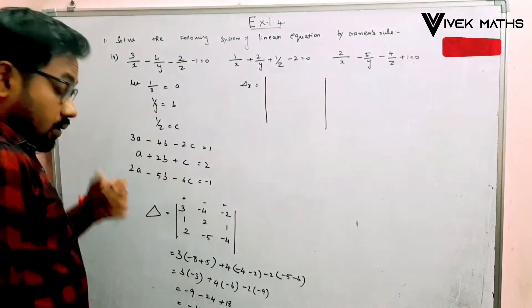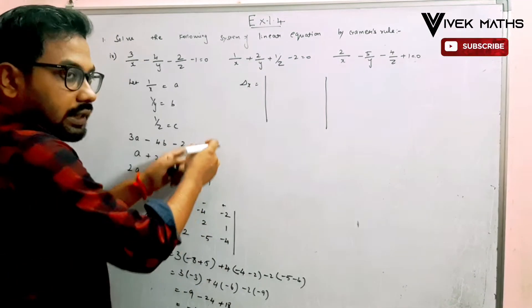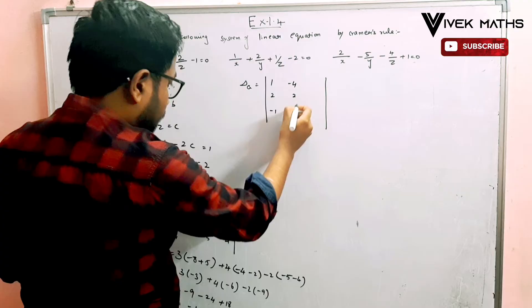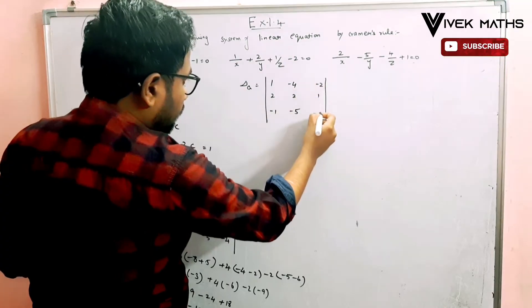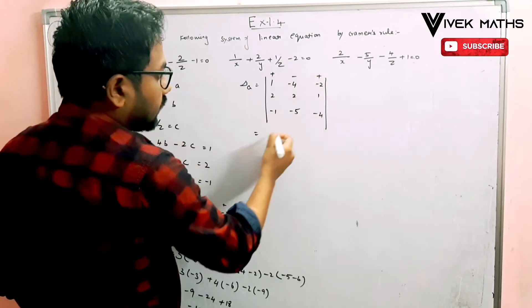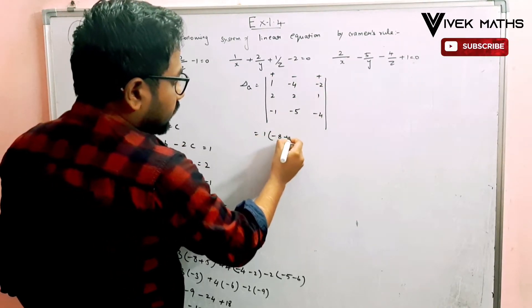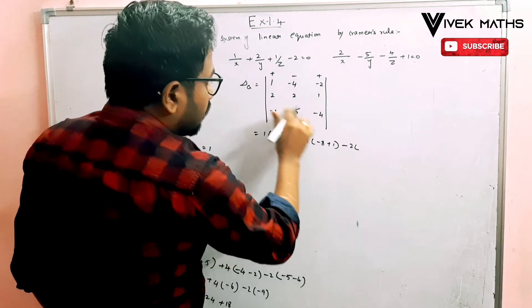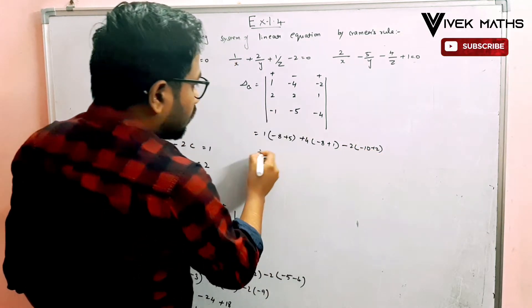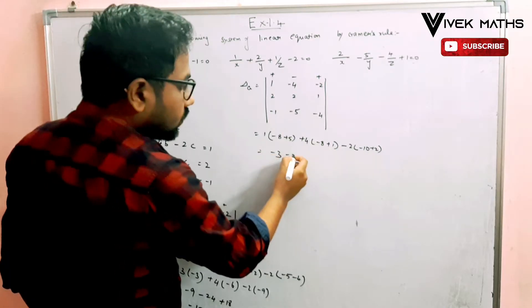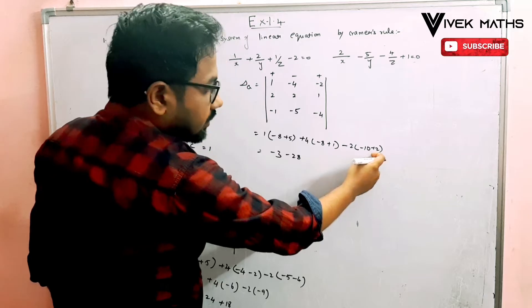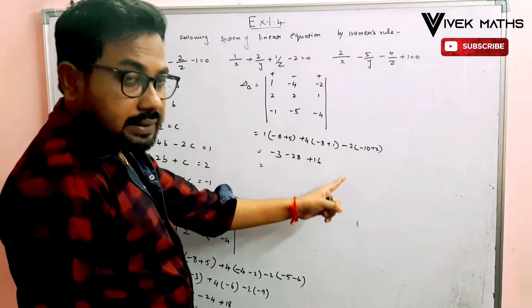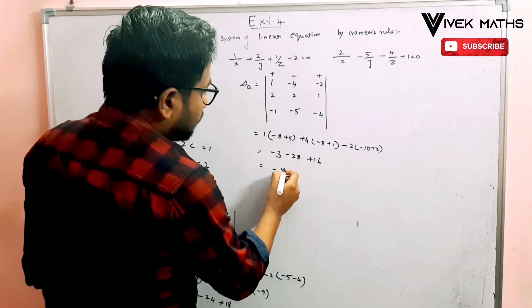For delta_a, we replace the first column with the constant numbers 1, 2, minus 1. Applying cofactor expansion: 1 minus 8 plus 5, minus 4, plus 2, giving minus 3 minus 7, minus 28, minus 8 minus 2 plus 16. So delta_a equals minus 31 plus 16, which is minus 15.